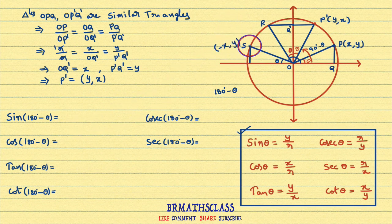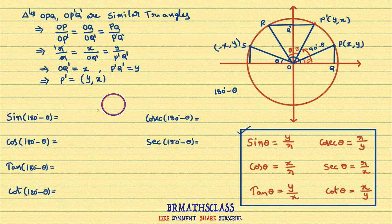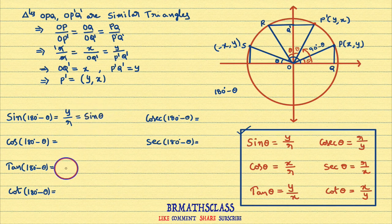Now we know the coordinates of S. Sin(180 degrees minus theta): sin theta is defined as y coordinate of the point divided by radius of the circle. Sin(180 degrees minus theta) means the y coordinate of point S, which is y, divided by radius. Since y by r equals sin theta, sin(180 degrees minus theta) equals sin theta.